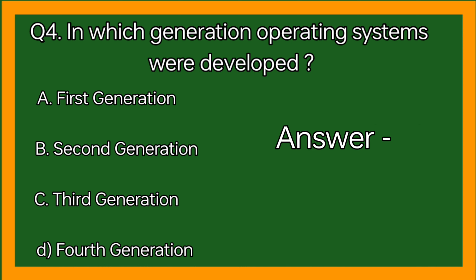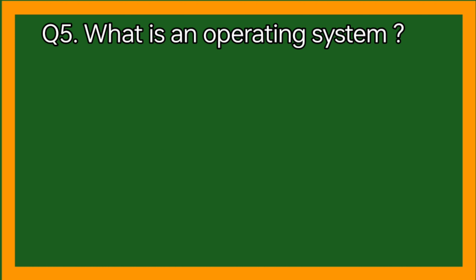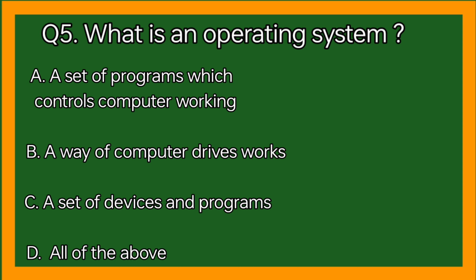Correct answer: Third generation. Question 5: What is an operating system? Option A: A set of programs which controls computer working, option B: A way of computer drives work, option C: A set of devices and programs, option D: All of the above.